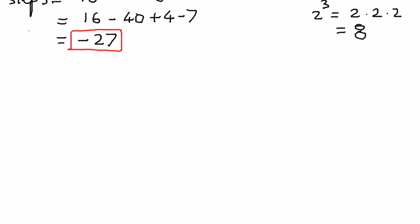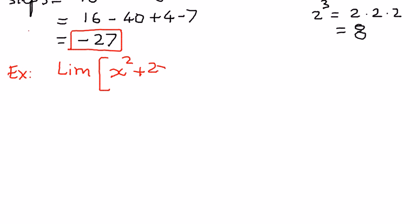Let's look at another example. This time, let us find the limit of x to the power of 2 plus 2x minus 3, as x approaches 2. We have a polynomial expression with several terms.